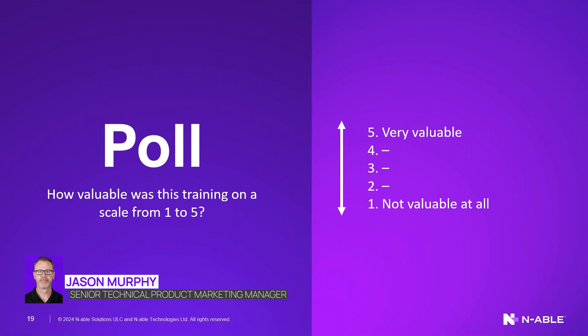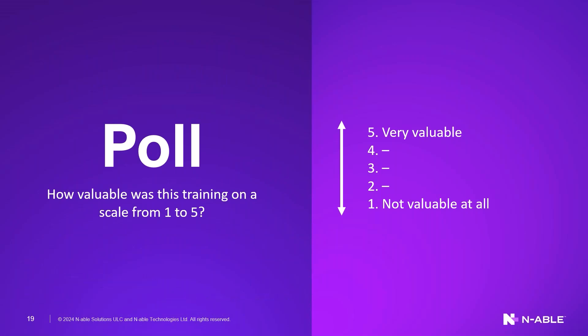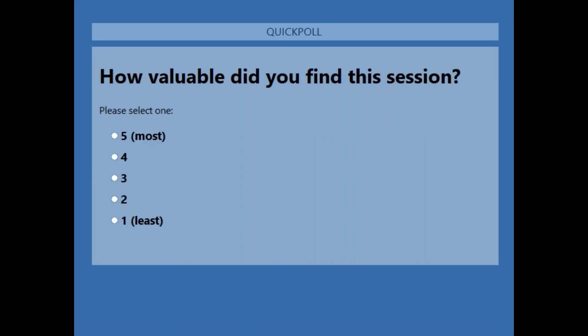That's the bootcamp for today. My name is Jason Murphy. I would love for you to give me a rating on today's bootcamp — five being awesome, one being absolute trash. Let me know how I did, because in order for me to do more bootcamps like this I need to prove to my bosses that we're doing a good job here. Give me a quick rating — that would be awesome.